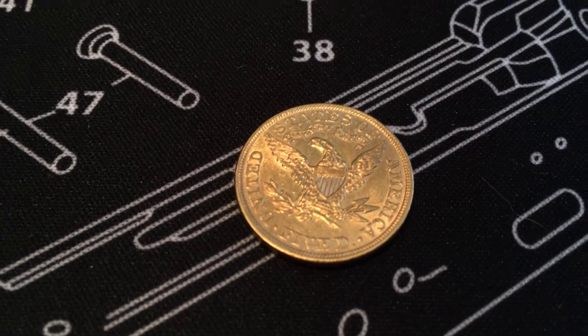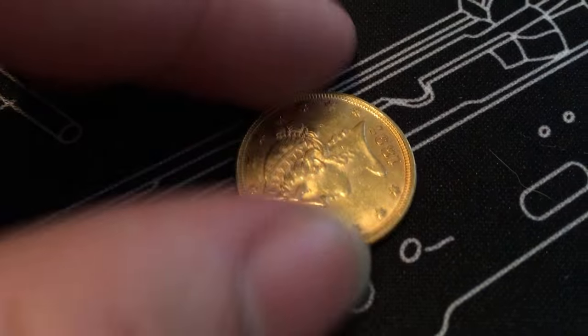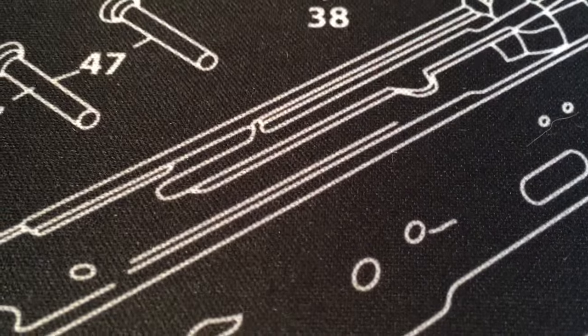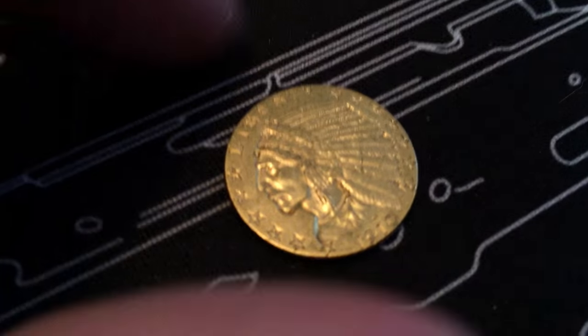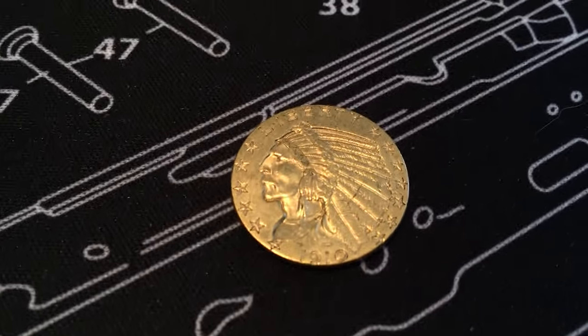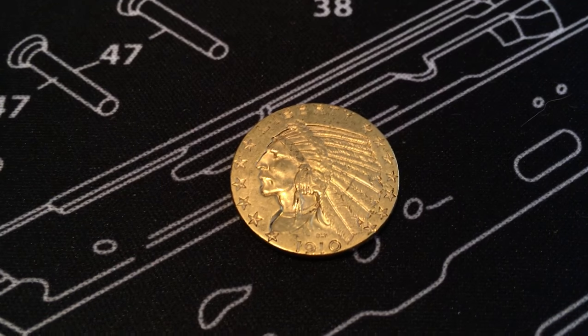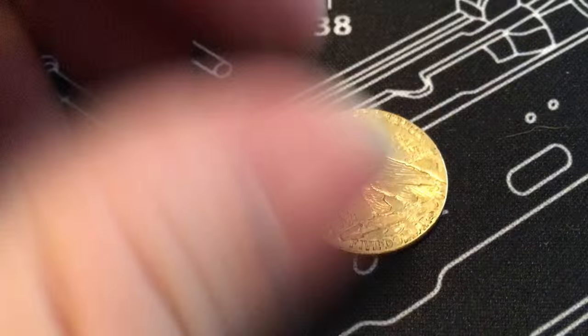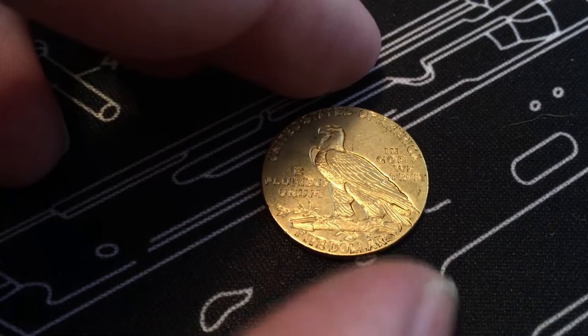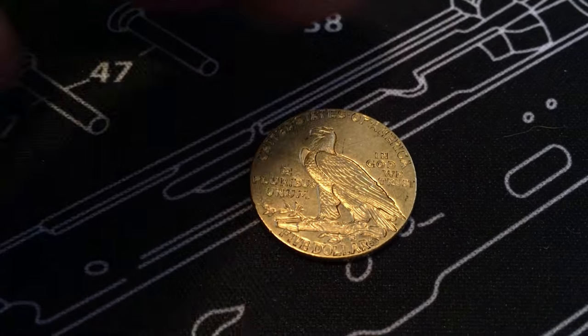Bunch of gold I've been wanting to get. Next up is a $5 Indian head, looks like 1910 unless I'm mistaken. There's the back, also supposed to be AU.